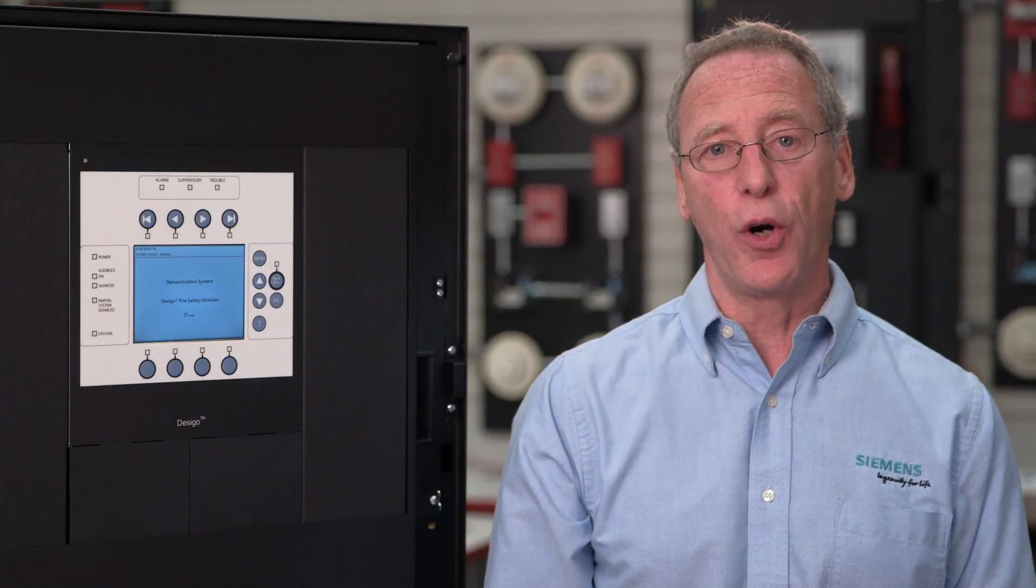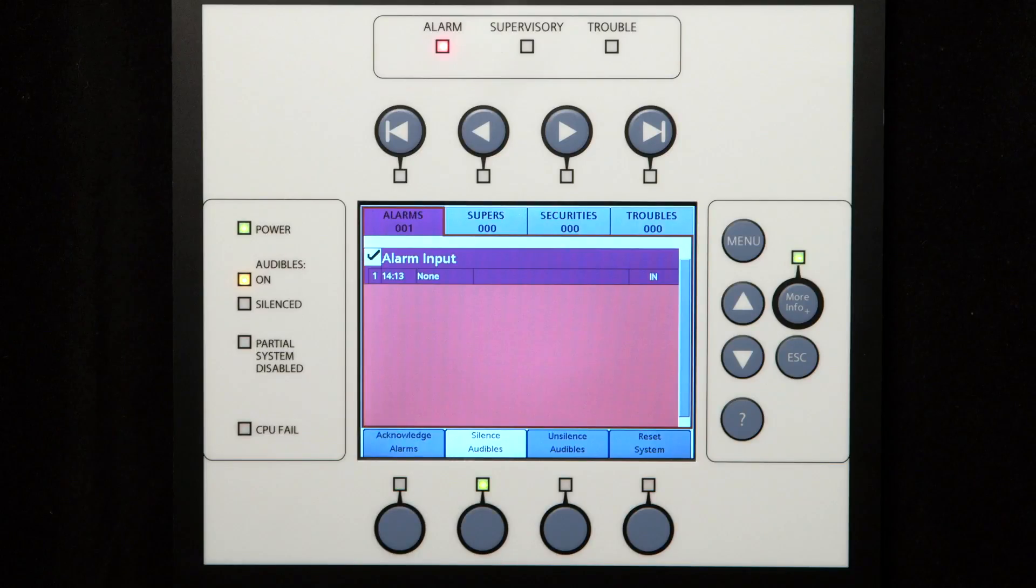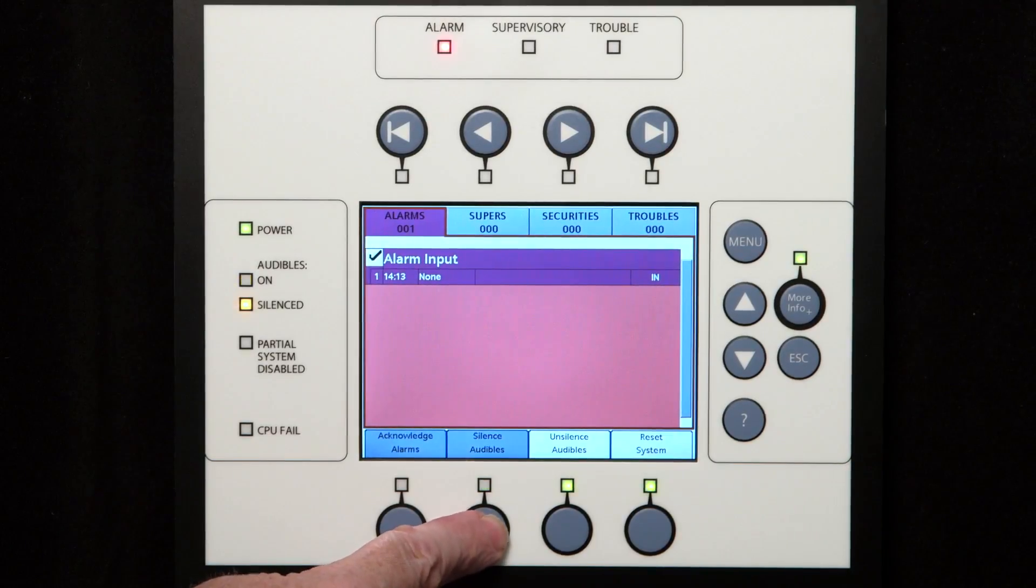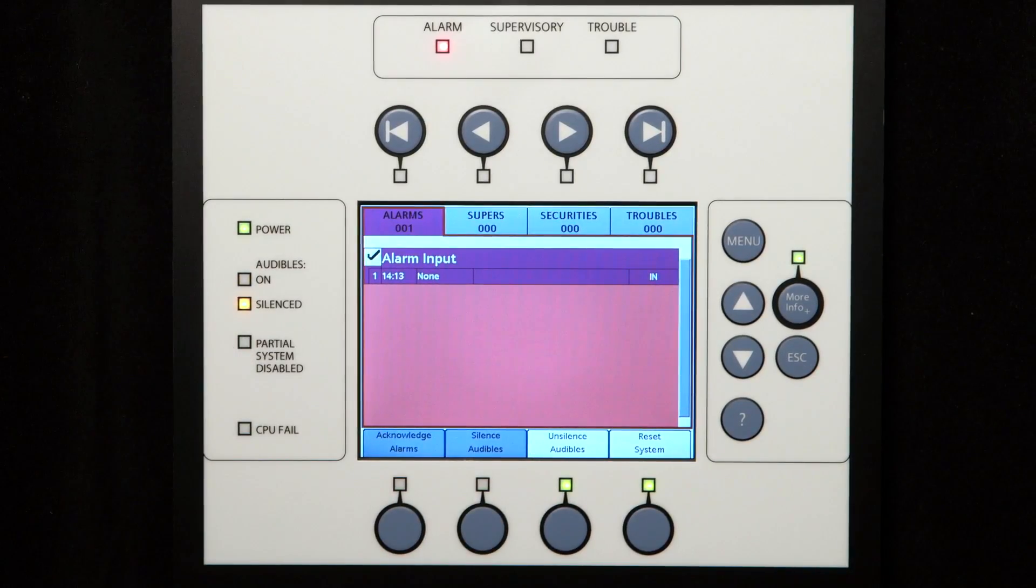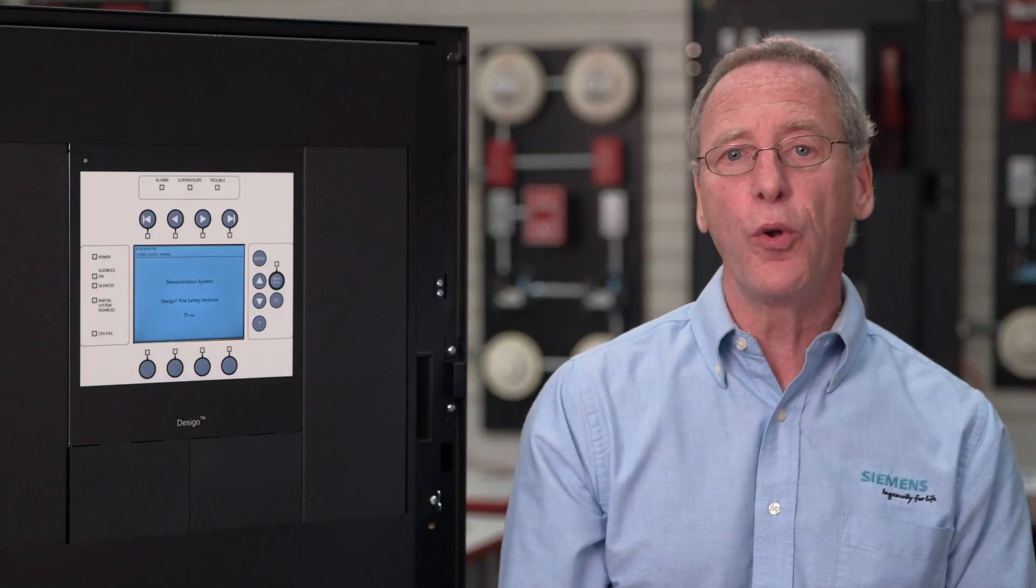Once the event is acknowledged, the next step is to silence the audibles. The silence button is now shown on display and the LED above the button is lit. When pressed, it will turn off any audibles programmed as silenceable and will light the audible silenced LED. In full operation mode, silencing audibles is only done when authorized, as the building occupants will not notice when the audibles are shut off.